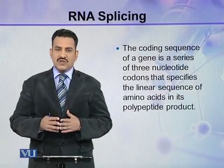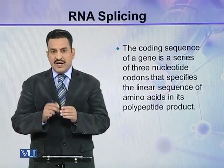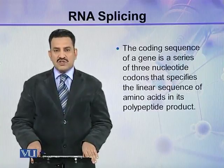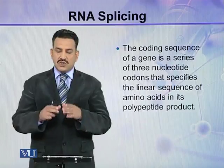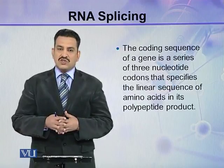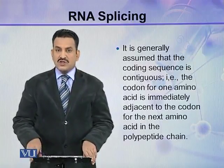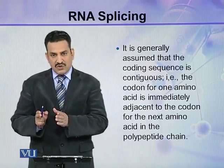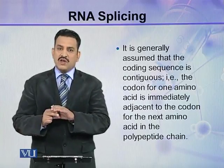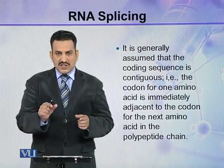The coding sequence of a gene is a series of three-nucleotide codons, and these codons specify the sequence of amino acids in its polypeptide product. So the sequence of a gene, which is in the form of codons, is translated into the sequence of amino acids. It is generally assumed that the coding sequence is contiguous — the codon for one amino acid is immediately adjacent to the codon for the next, without any space in between.